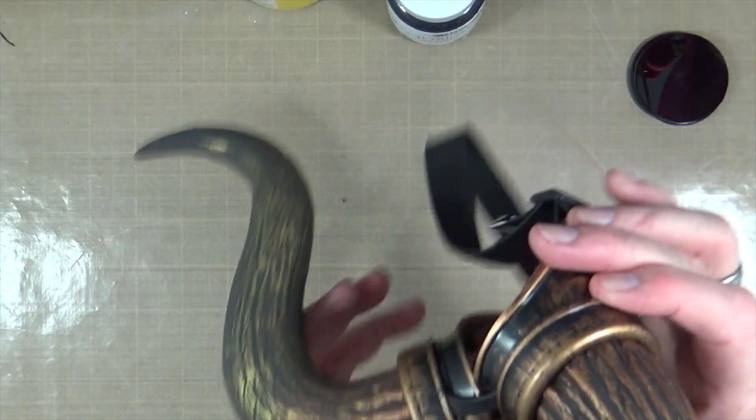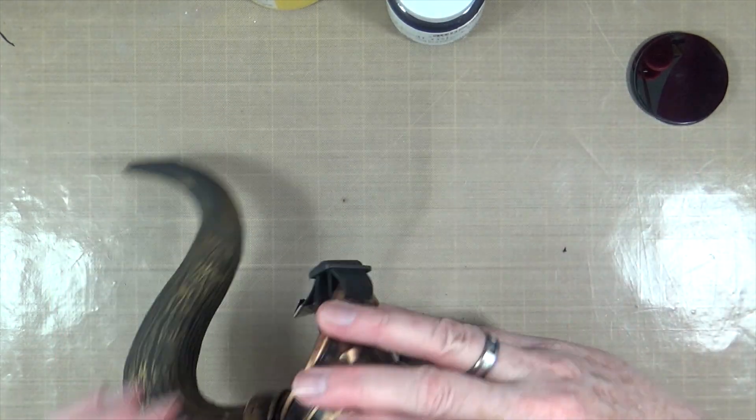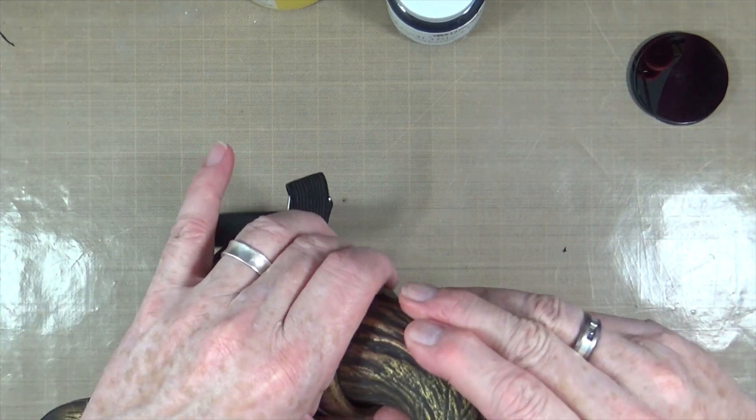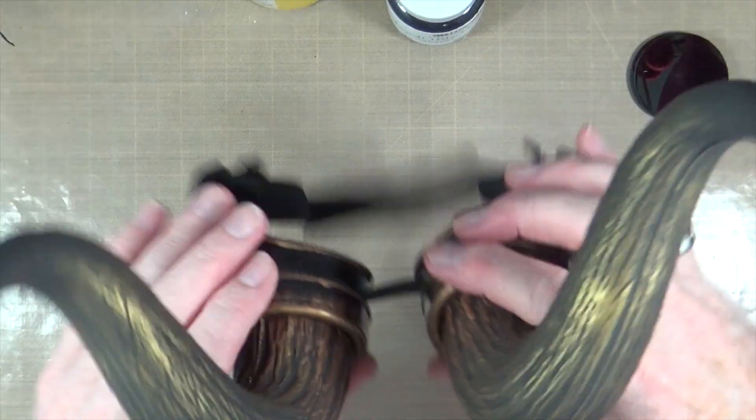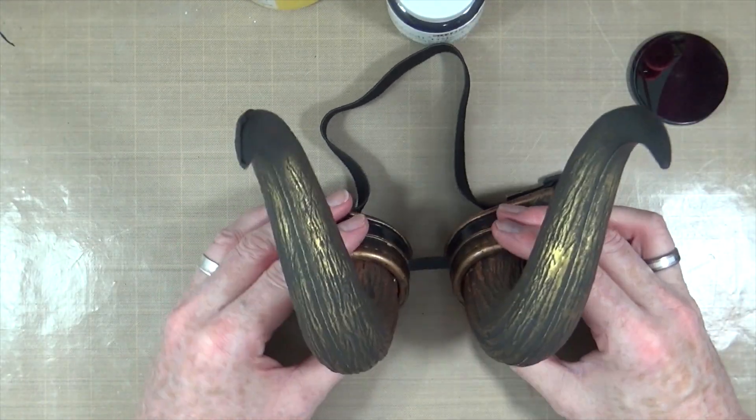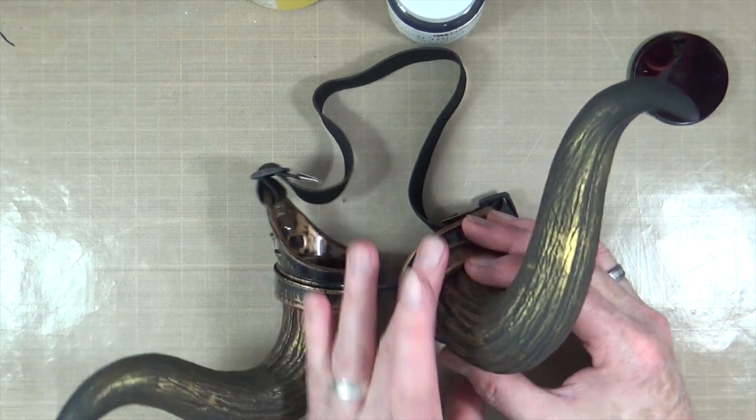Don't worry if your horn's not lined up, because what you're able to do is just very gently twist your horn around so that it then will sit exactly where you want it to sit on your hat.